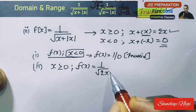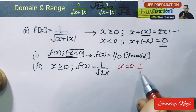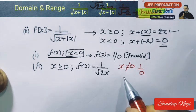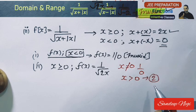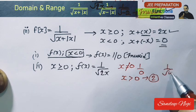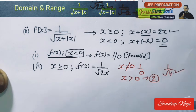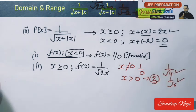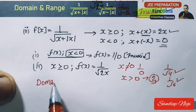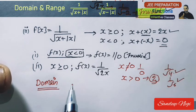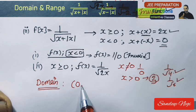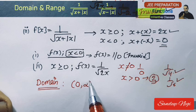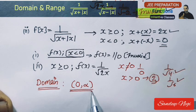For Case 1, where x is 0 or greater, the function becomes 1 upon under root of 2x. If we put x = 0, this becomes 1 upon 0 — so x cannot be 0. But if we put any number greater than 0, let's say x = 2, then it becomes 1 by root 4, which is a valid number. If we put x = 3, it becomes 1 upon root 6, which is also a valid number.